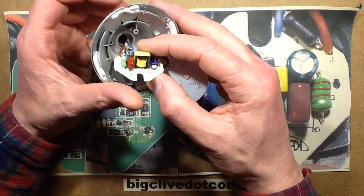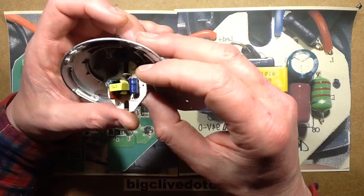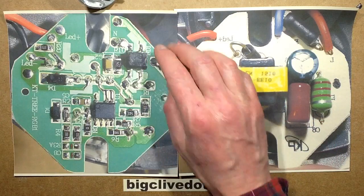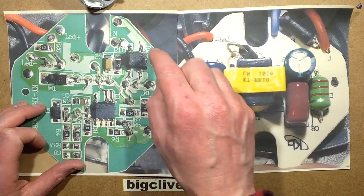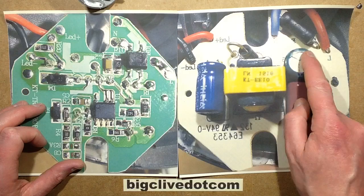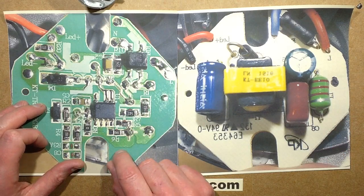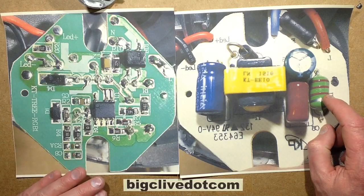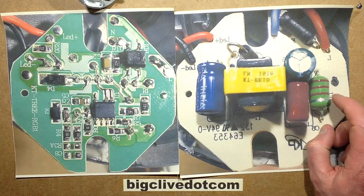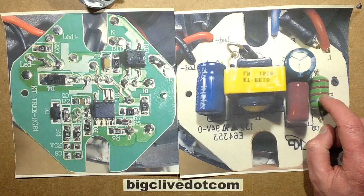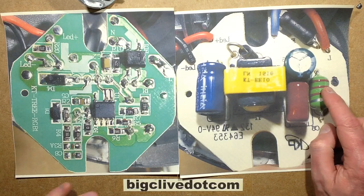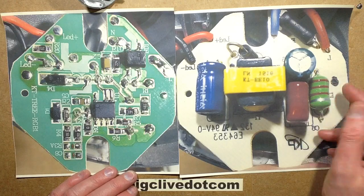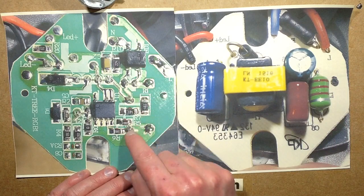So the mains comes in, the neutral goes straight to the bridge rectifier. The live goes through this sleeved resistor which I'm guessing is acting as a fuse. It says F which probably means fuse. It looks like a metal film resistor, it's grey and it's got that sort of shape to it. It's just a fusible resistor. That goes to the bridge rectifier, so that's our DC coming out, and it goes straight to this capacitor here for smoothing.